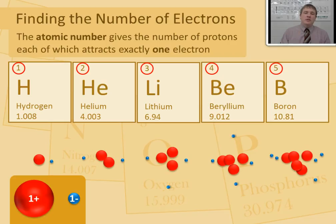Not only does the atomic number tell you the number of protons, but because each proton attracts exactly one electron, the atomic number also tells you the number of electrons in an atom of any element.